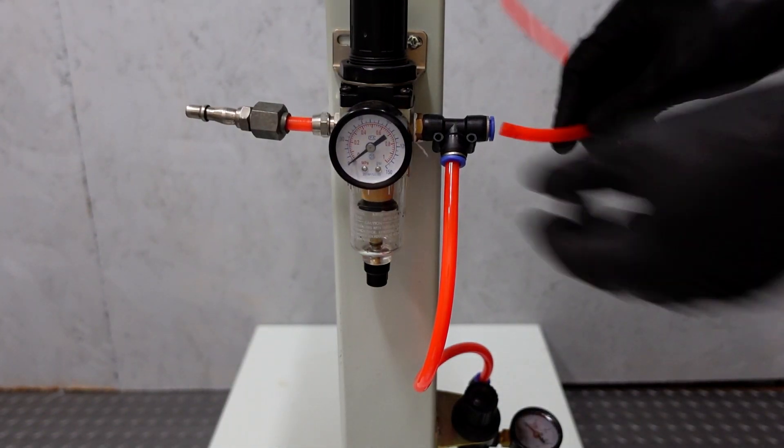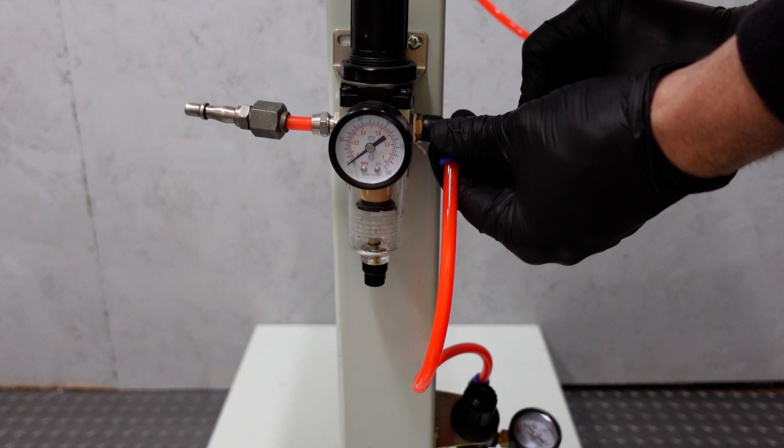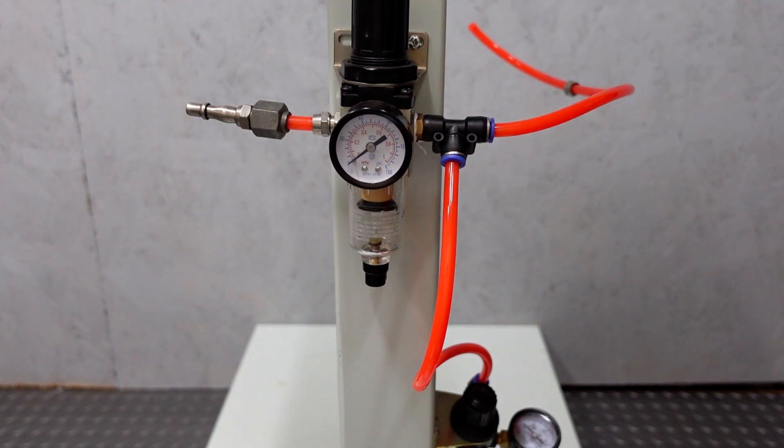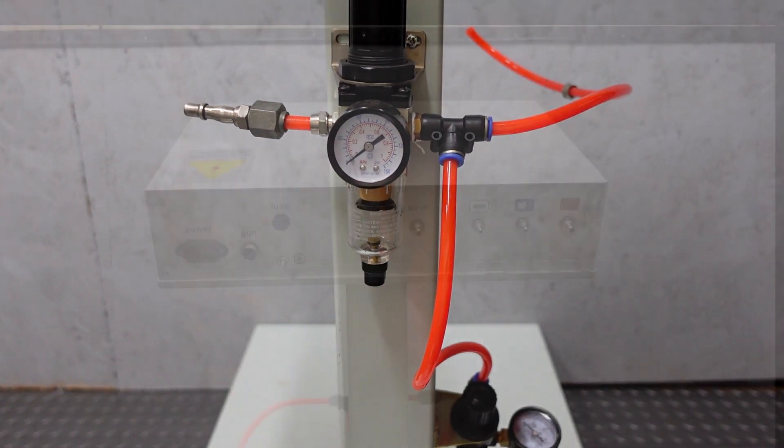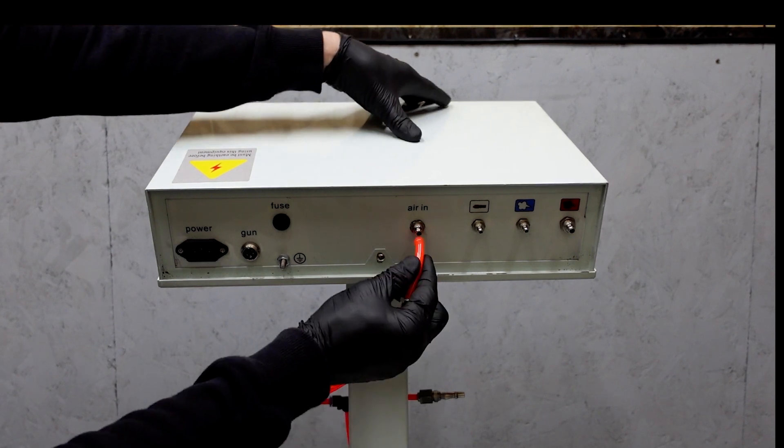Back to the water trap we connect another hose to the outlet which then goes up to the back of the machine. The other end attaches to the air in.